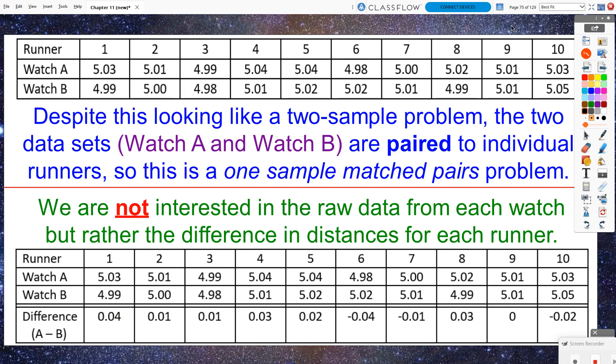Despite this looking like a two sample problem, because it looks like we have one set of data for watch A and one set of data for watch B, these were really paired to the same person. So this was an example of a matched pairs design. Runner one got to use both watches at the same exact time.